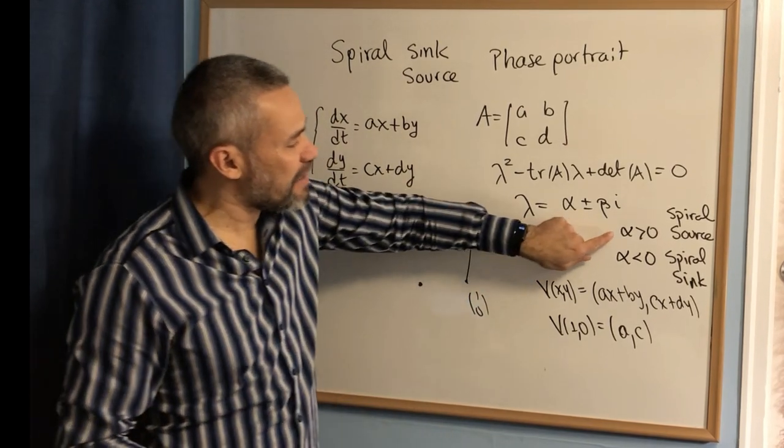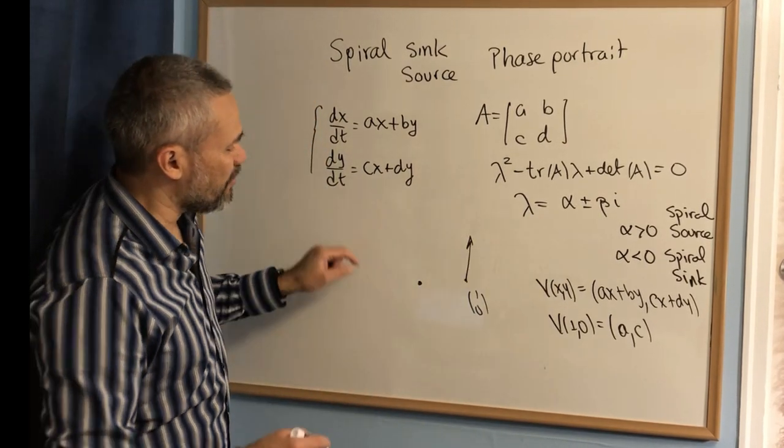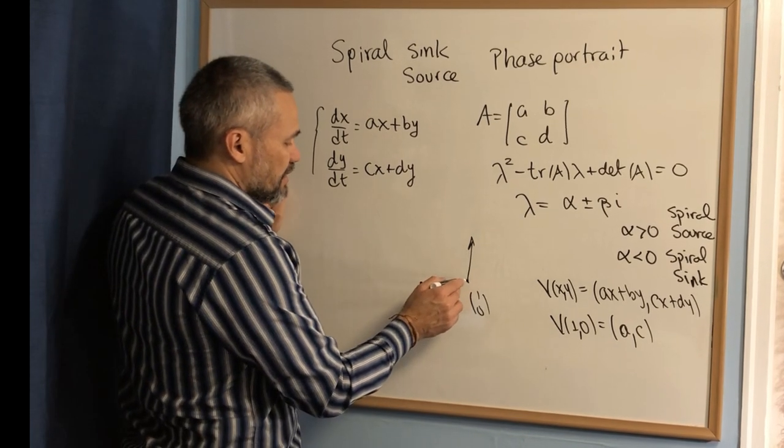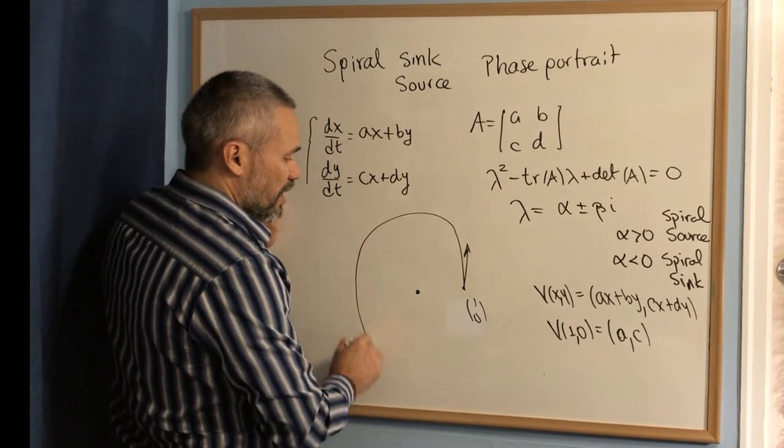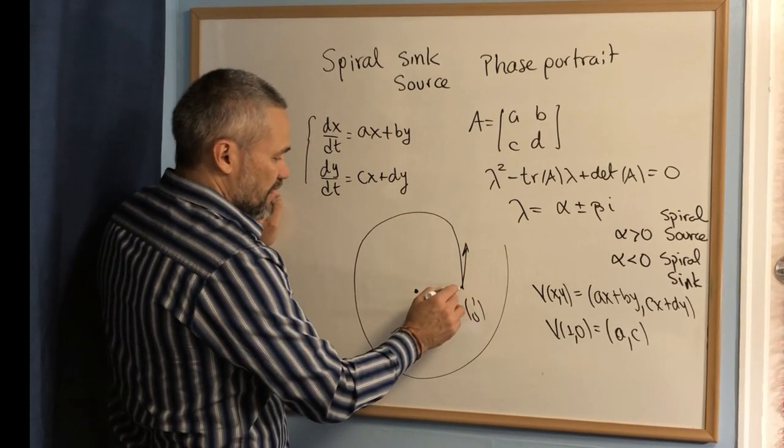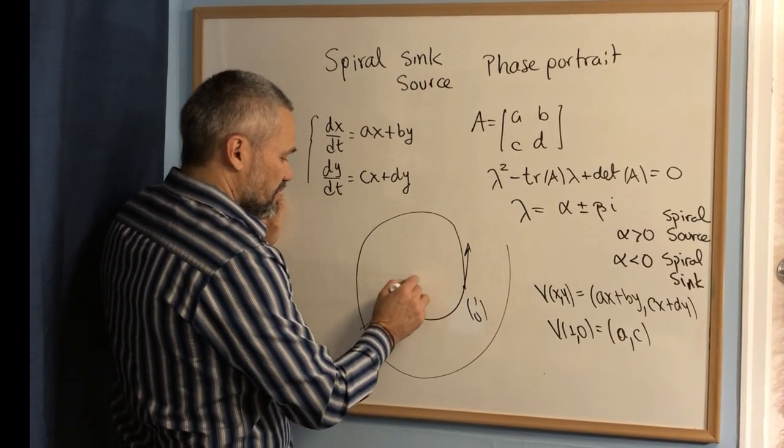In the case that alpha is bigger than zero, that means this is the direction it goes out. This is going to go out like this, and then in this direction, you will go around.